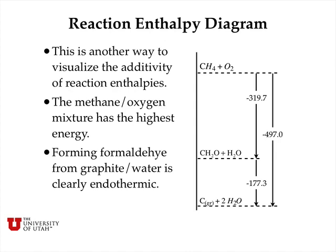We can illustrate this on a reaction enthalpy diagram, where the highest energy combination is methane plus oxygen. The formaldehyde plus water lies 319.7 kJ per mole lower in energy, and the graphite plus two water molecules lies an additional 177.3 kJ per mole lower in energy. So the total is just the sum of the two steps. Forming formaldehyde from graphite and water is clearly endothermic, because graphite and water lie at the bottom of the diagram, and it would take 177.3 kJ per mole additional heat to form formaldehyde and water.